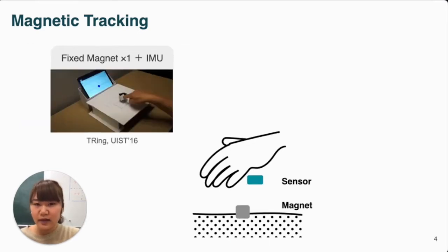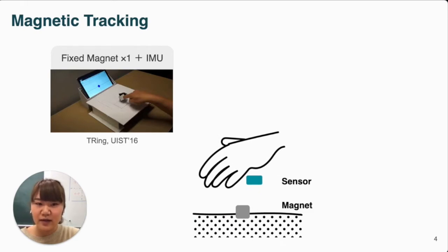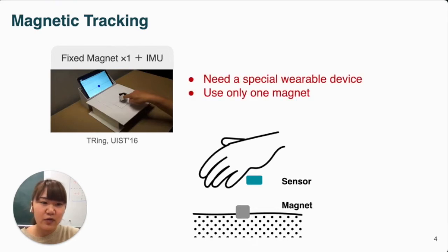On the other hand, there's research to fix the magnets and move the sensor. The advantage of this approach is that the fixed object is completely passive. However, in the previous research, a special device has to be attached to the finger and only one magnet was used.